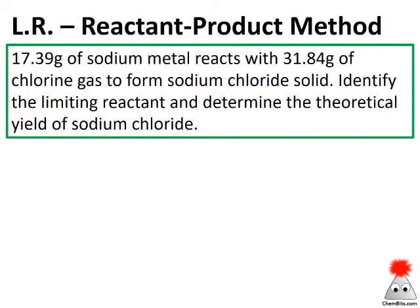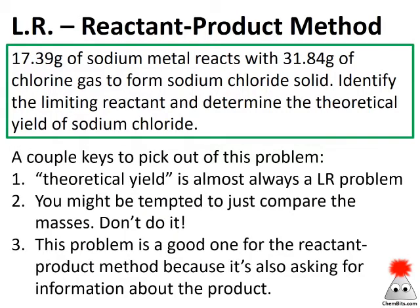Let's look at a typical limiting reactant problem: 17.39 grams of sodium metal reacts with 31.84 grams of chlorine gas to form sodium chloride solid. Identify the limiting reactant and determine the theoretical yield of sodium chloride. Just looking at this problem, there are a couple of things you might want to look for as ways to pick these out.